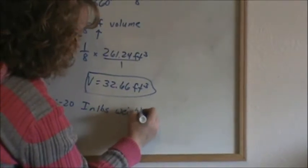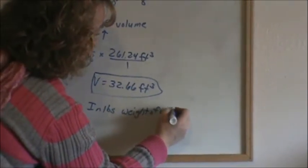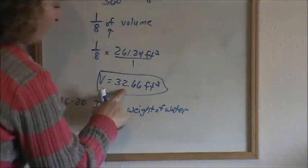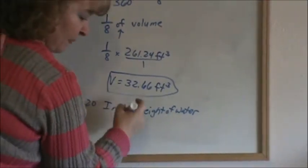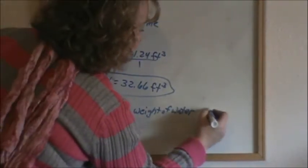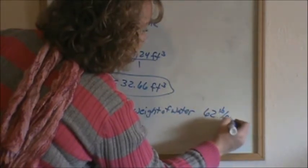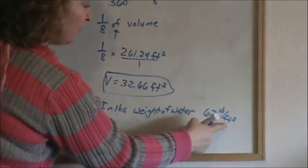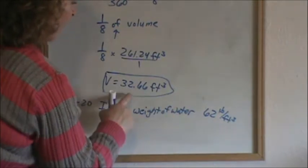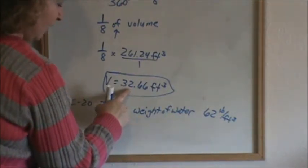So they want to know the weight of the water in that 45 degree section of can. And water weighs 62 pounds per cubic foot. So every cubic foot weighs 62 pounds. And we have 32.66 cubic foot.